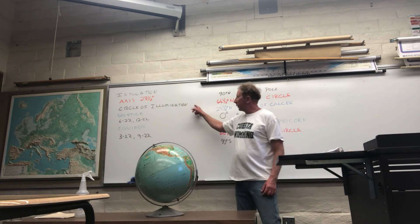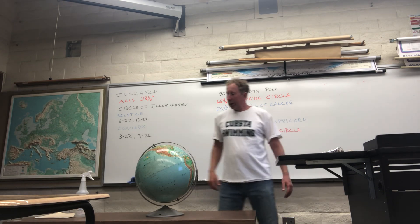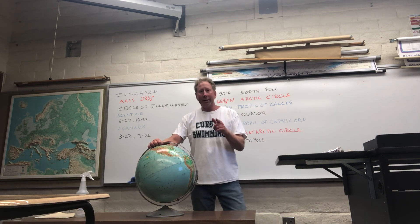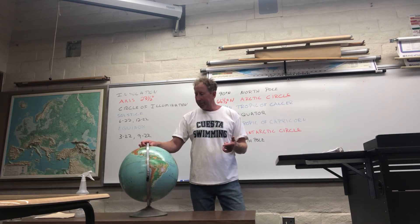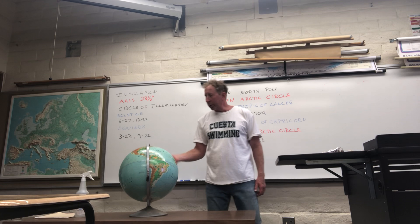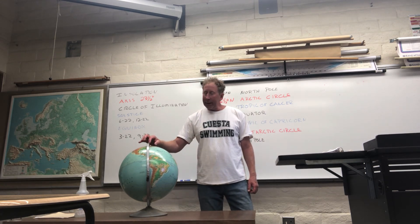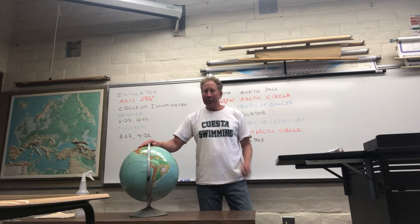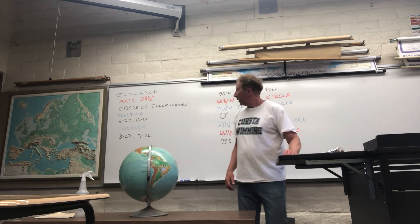The circle of illumination — to help you do your exercise — is the line separating the light and the dark halves of the earth. If I shut the lights out in here and shined a flashlight on that globe, I could only light up about one half of it. And that line that would separate the light half from the dark half is called the circle of illumination.